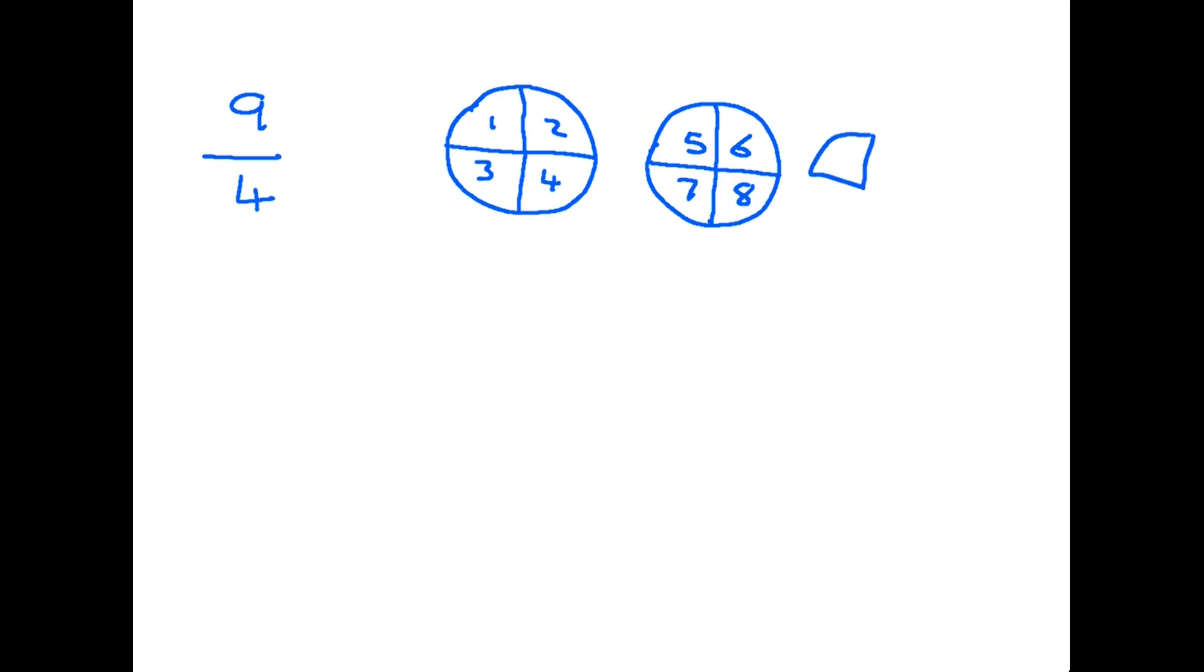Which leaves me with another one, because the fraction is 9 quarters. So, over here, I have a part of a pizza. Now, 1, 2, 3, 4, 5, 6, 7, 8, 9. 9 out of 4. But of course, looking at it in real terms, that is a full pizza. So, in fact, 9 over 4 is the same as 2 and a quarter.